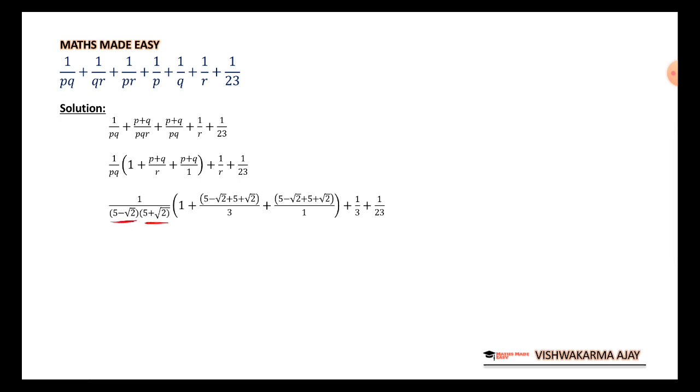Similarly, 5 minus root 2, 5 plus root 2, 5 plus root 2, 5 minus root 2, 5 plus root 2. Similarly here, you can see this minus root 2 and plus root 2 get cancelled. Similarly, minus root 2 and plus root 2 cancel.